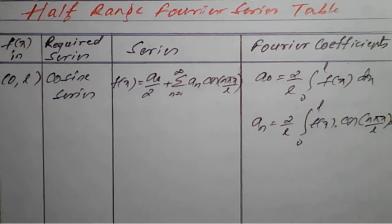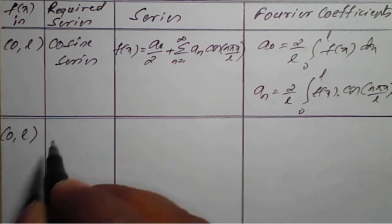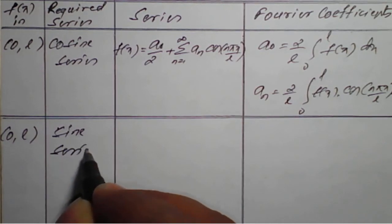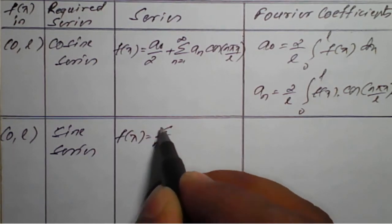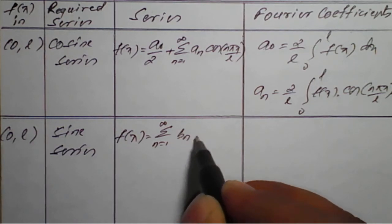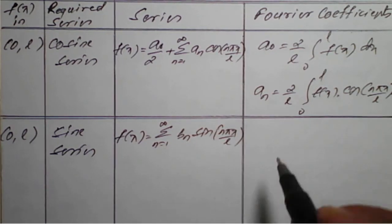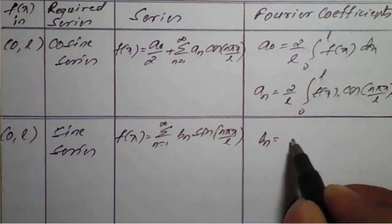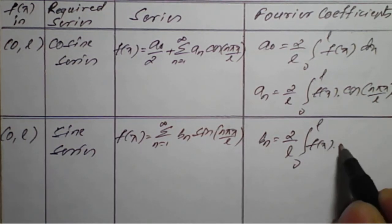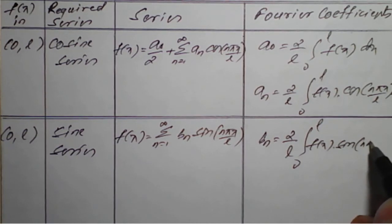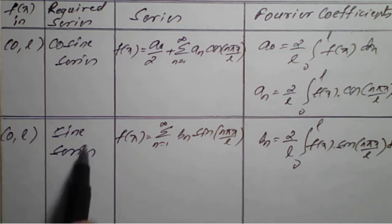For the interval 0 to l, the sine series is: f(x) = summation n from 1 to infinity of bₙ sine(nπx/l), and the coefficient bₙ = (2/l) integral from 0 to l of f(x) sine(nπx/l) dx. This is the sine series for the interval 0 to l.